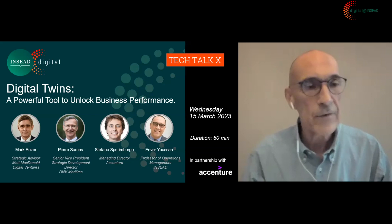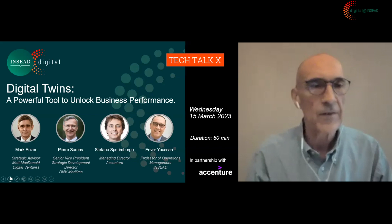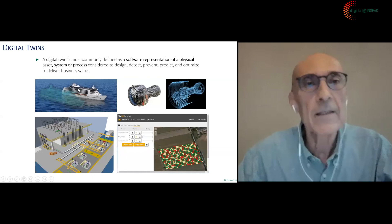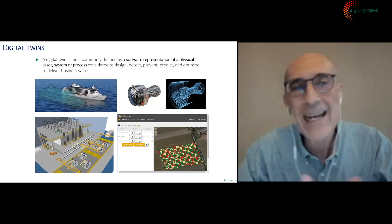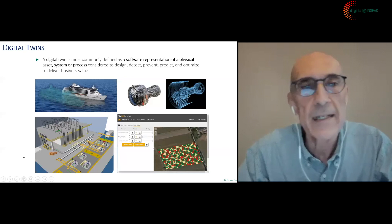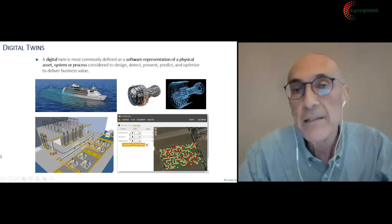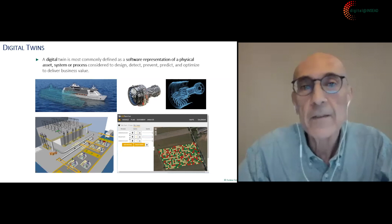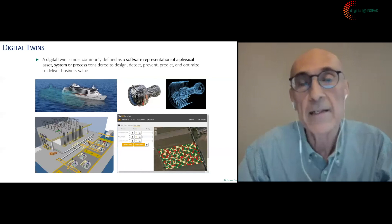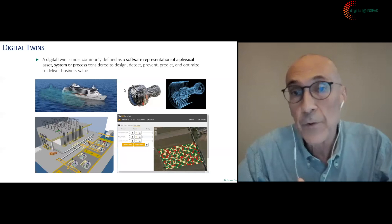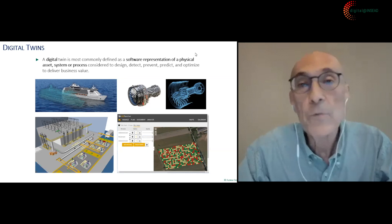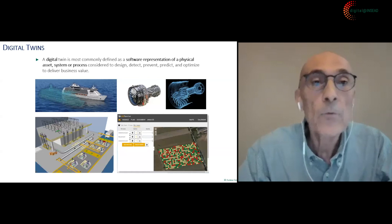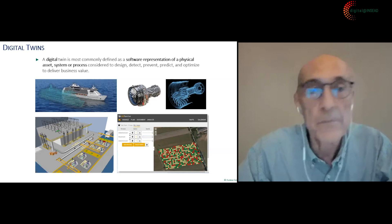Before I introduce our speakers, let me say a few words about the context — what we mean by digital twins. When we talk about a digital twin, we are typically referring to a software representation of some sort of a physical asset, a system, or a process. We do this so that we can design and optimize the performance of the system at the design stage, monitor performance, detect unusual behaviors, predict future performance, and prevent failures in a proactive fashion, ultimately delivering business value.